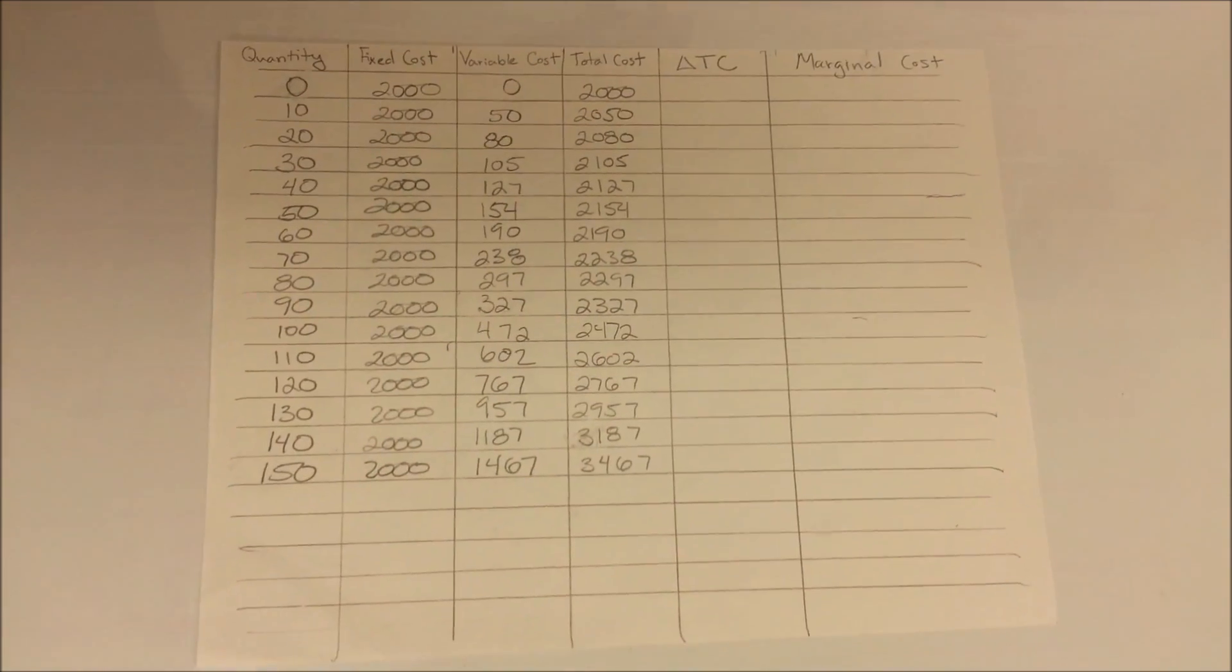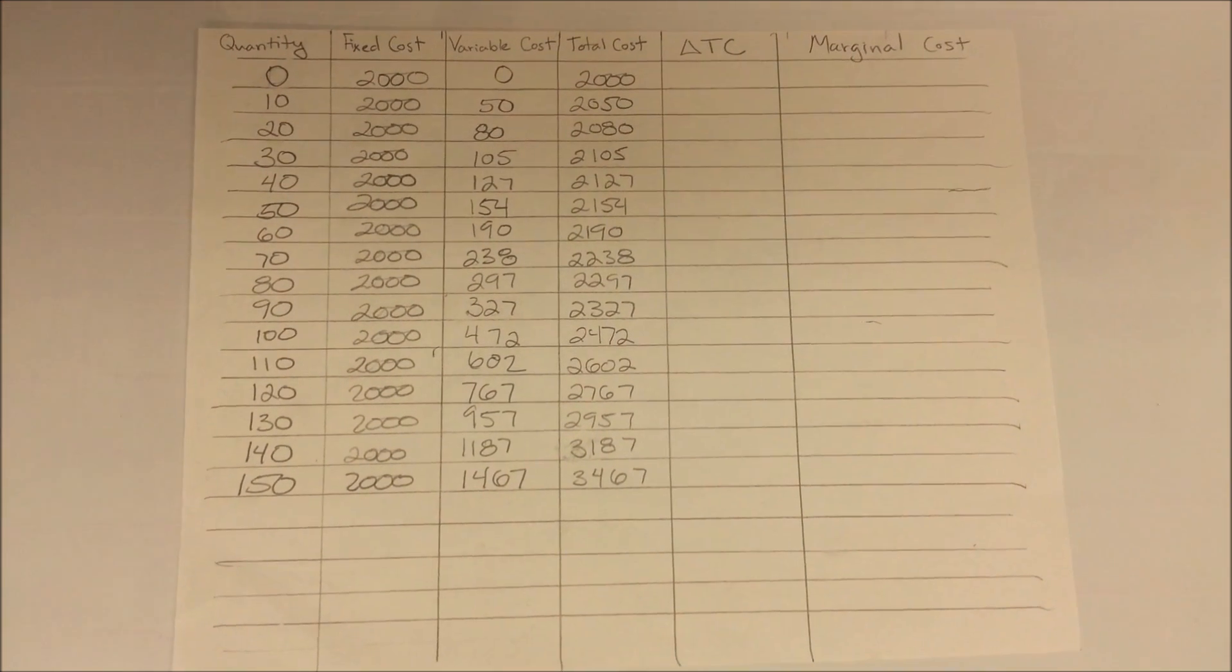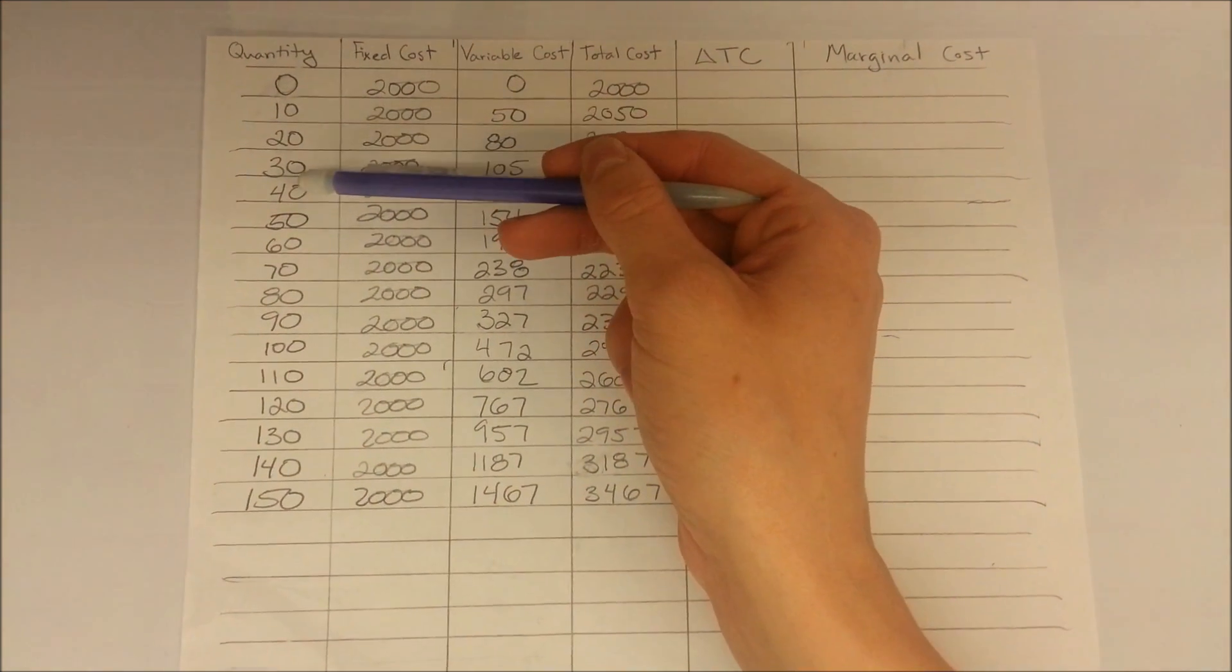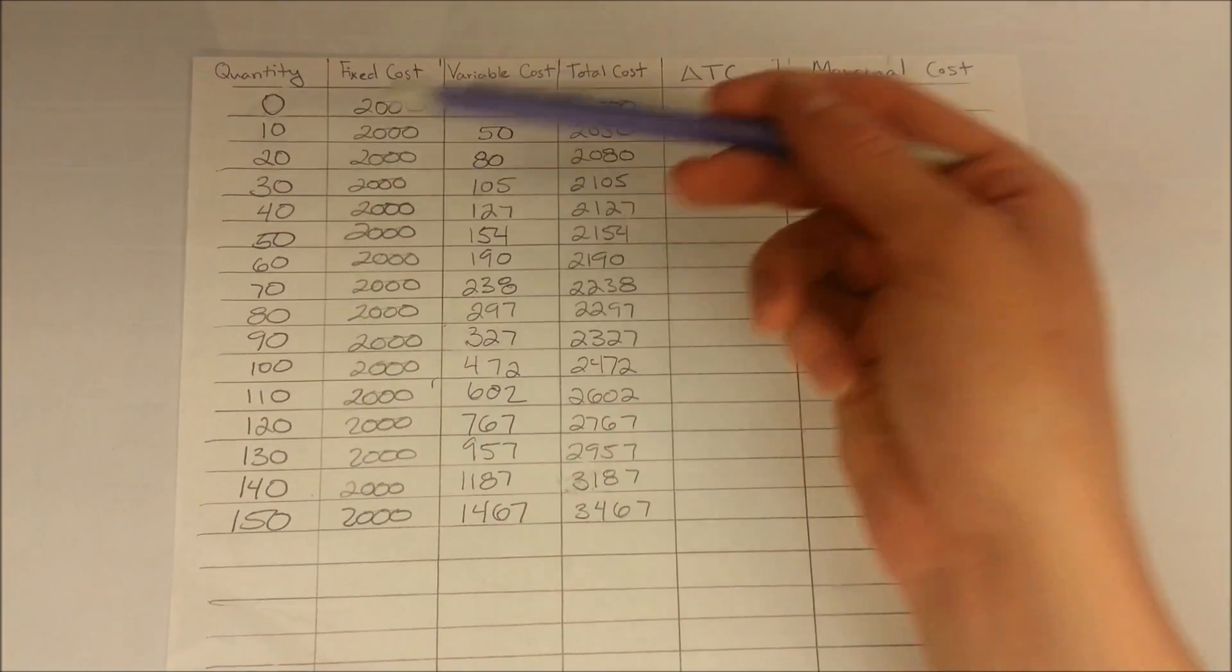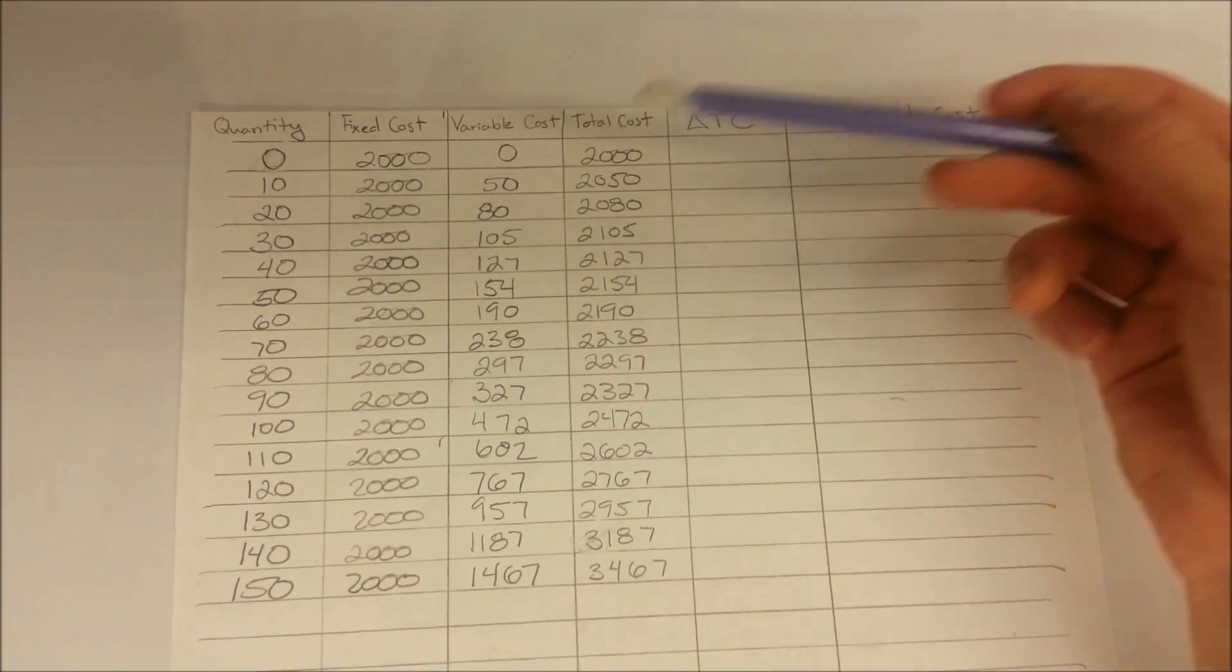Here is a typical problem of what a marginal cost calculation would look like. Here's our quantities changing incrementally by tens. Our fixed cost is $2,000 and remains the same throughout.